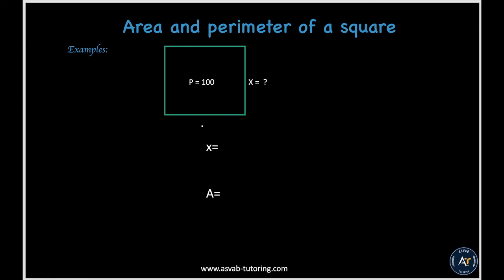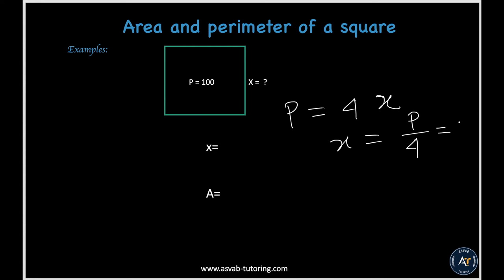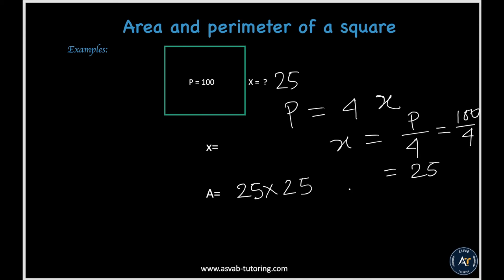This time the perimeter is given. Since perimeter equals 4x, x equals perimeter divided by 4. So 100 divided by 4 gives a side length of 25. The area equals 25 times 25, which is 625.